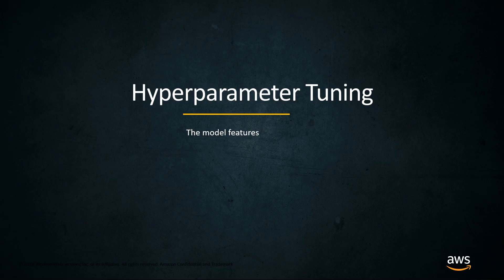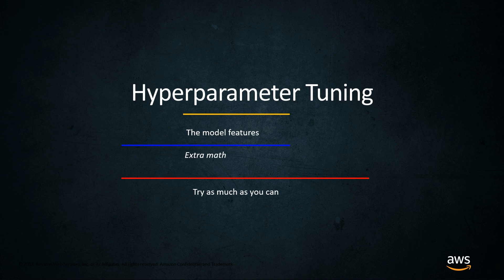Let's dive into hyperparameter tuning. A parameter generally refers to the features going into your model — the actual data being supplied. A hyperparameter typically refers to extra math — it's knobs you can supply, real numbers, whether that's the maximum depth of your trees or the learning rate of your deep learning models. Tuning basically refers to trying as many configurations as you can by running a large number of jobs. Over time we gain more intuition about which hyperparameters perform better under certain settings, and eventually there's a little less guess and check.